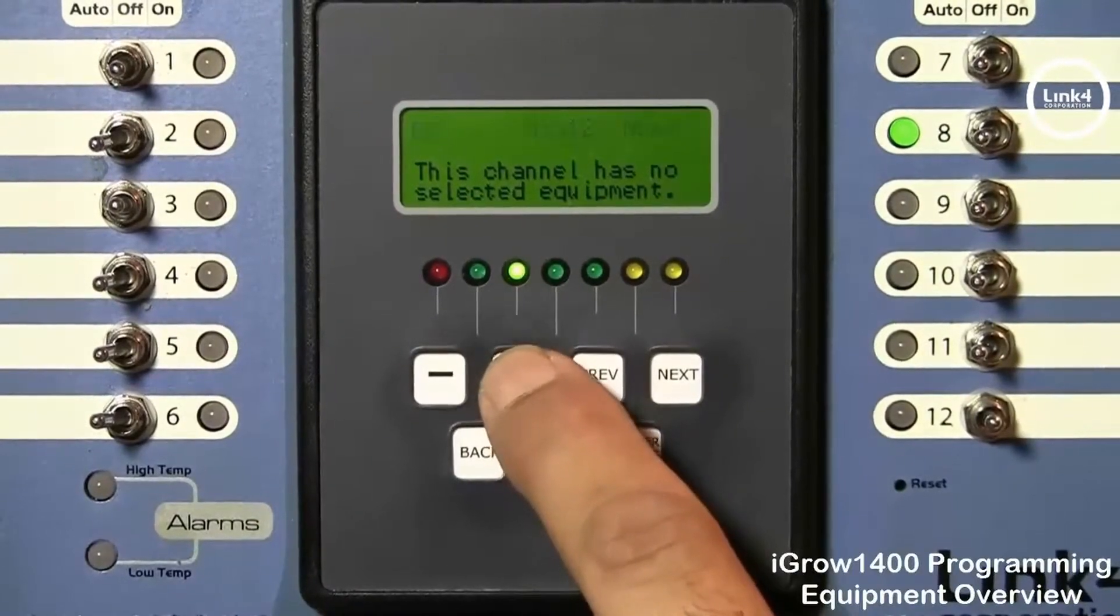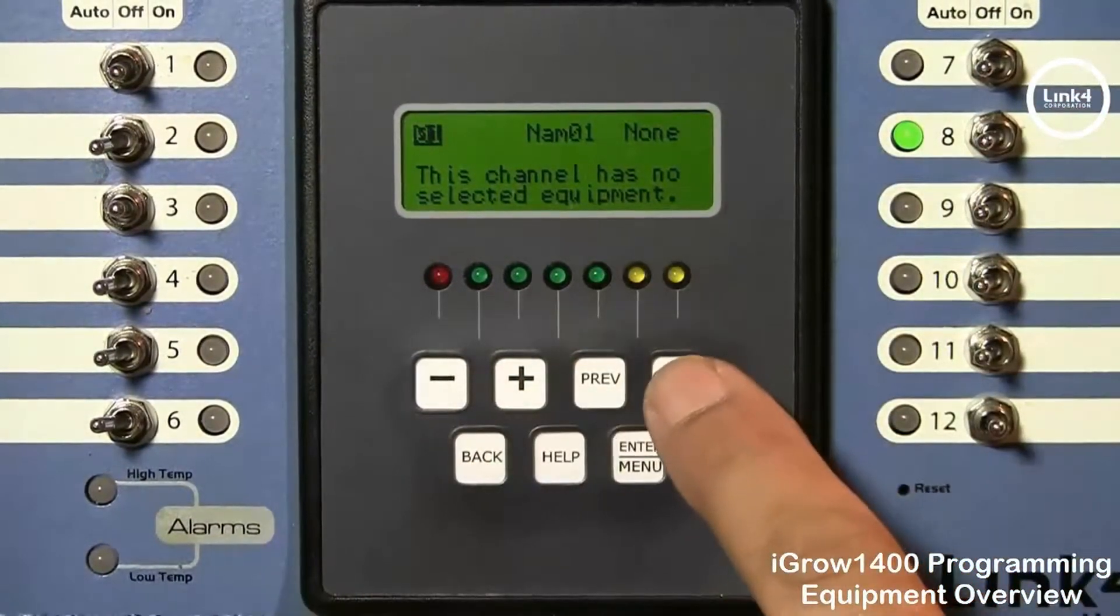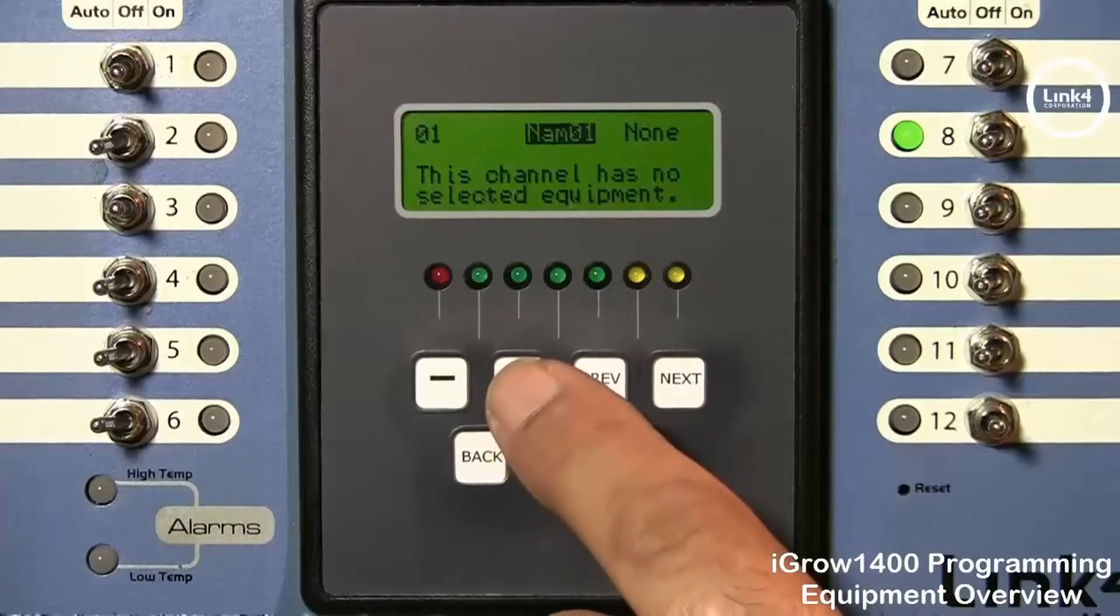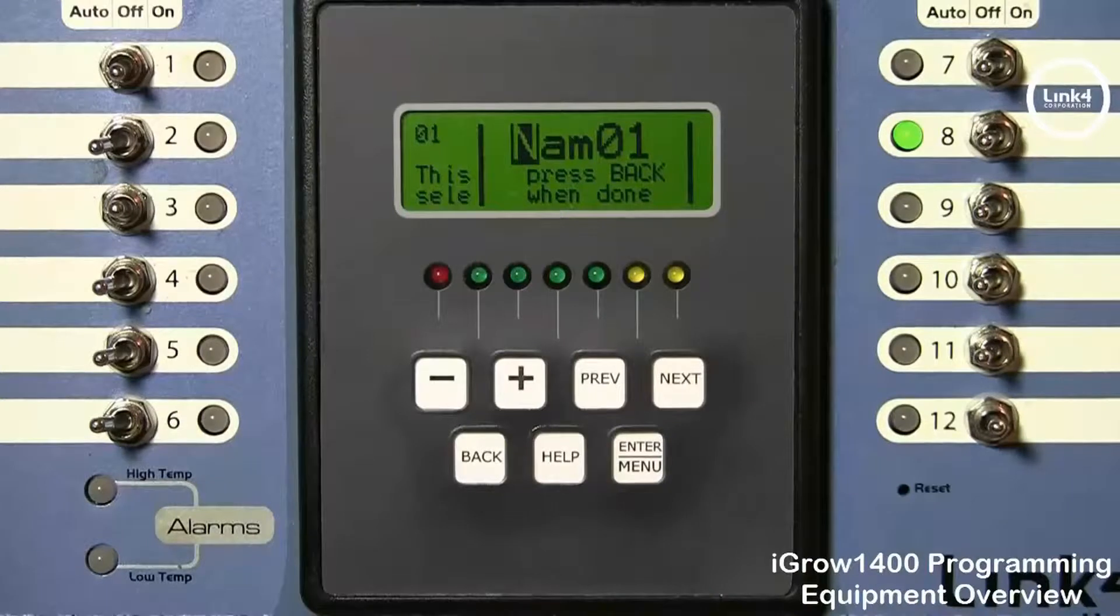But what we're going to do is we're going to start off at number one and let's say we're going to program number one you would hit next. Now first you would name the channel by hitting plus which expands the portion where you would name.